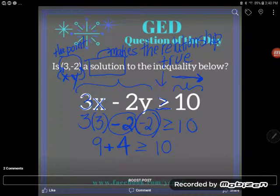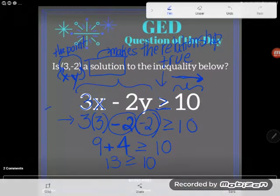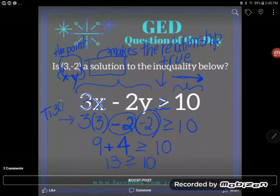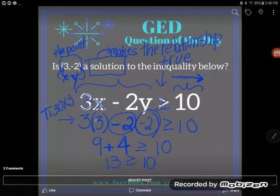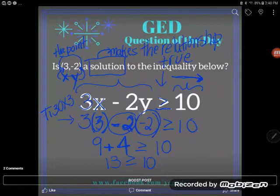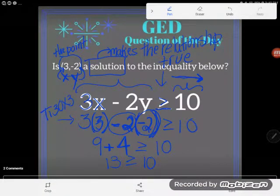And that's greater than or equal to 10, and of course 9 plus 4 is 13. Now the good news is, if you didn't know how to do all this simplifying right here on the left-hand side, your TI-30XS can do the integers for you. You could have plugged that entire expression there—3(3) - 2(-2)—you could type that entire thing into your calculator and it would have told you 13.